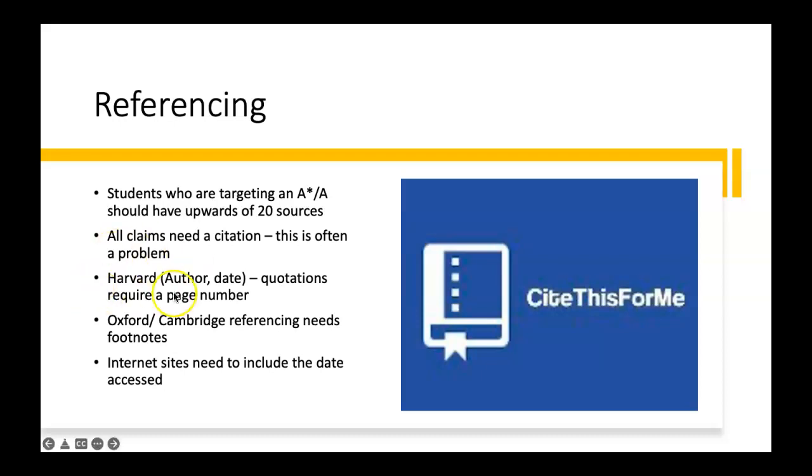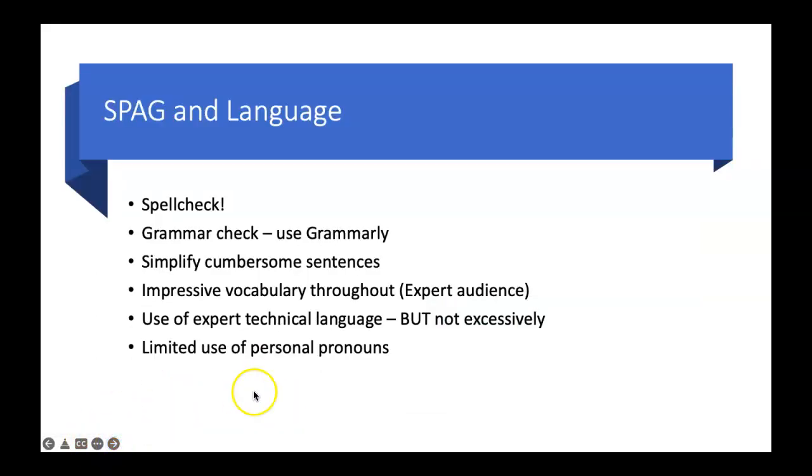Now, most of the students will use the Harvard system, the author date system. If they're using quotations, the quotation does need a page number. If they're using Oxford and Cambridge, they need to have regular footnotes. And the footnotes will require the whole citation at the bottom of the page or as endnotes. If the students are using internet sites, they need to include the date that they accessed the information. And obviously, at the end of the piece, they need a very clear reference list or a bibliography showing all of their sources.